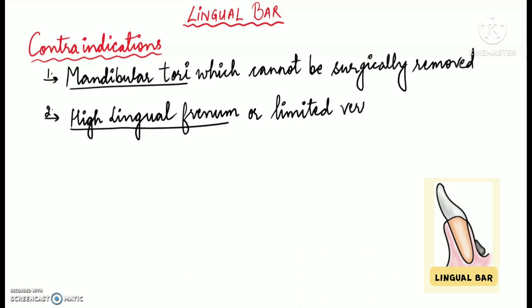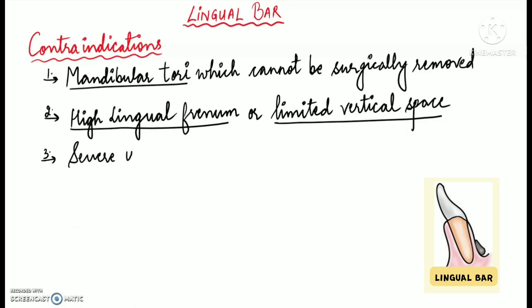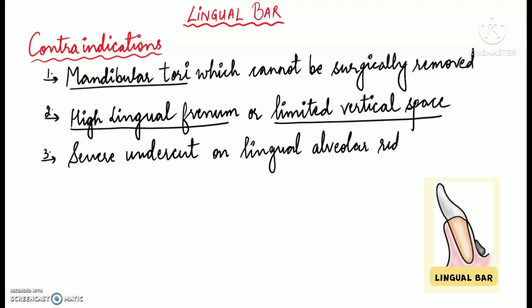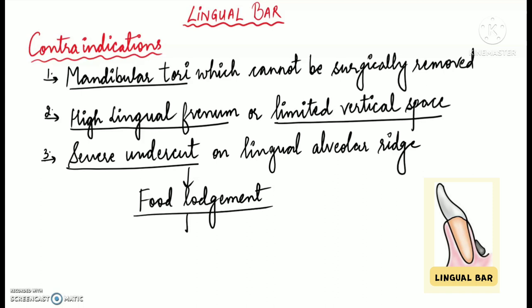A third contraindication is when a severe undercut is present on the lingual alveolar ridge. In such cases it is better to avoid lingual bar because there are increased chances of food lodgement under it, which can further result in periodontal problems.